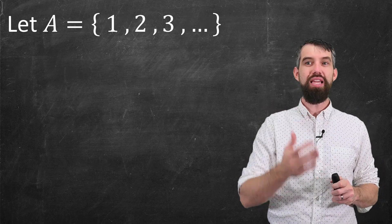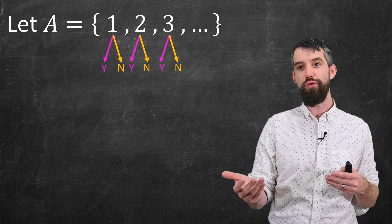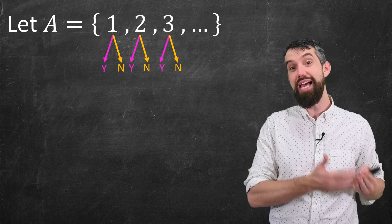Consider this. Previously, I thought for each of the different elements in the set, like one, two, three, and so forth, there's two options for any given subset. It's either included or it's not included. Yes or no.